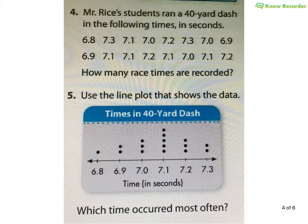So, let's take a look here. Mr. Rice students ran a 40-yard dash in the following times and seconds. All very slow, I will have you know. These kids are terrible. Just kidding. I have no idea. So, again, I have a data table here because I have a ton of data and it's all unorganized. They want to know how many race times are recorded. Seriously. Well, 1, 2, 3, 4, 5, 6, 7, 8. They're all lined up in two rows. 8 times 2, 16. Got to love questions like that.